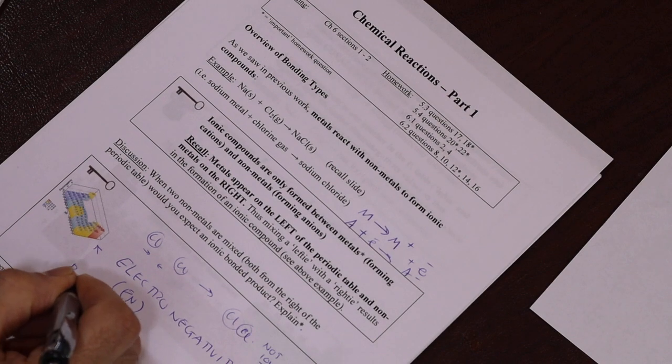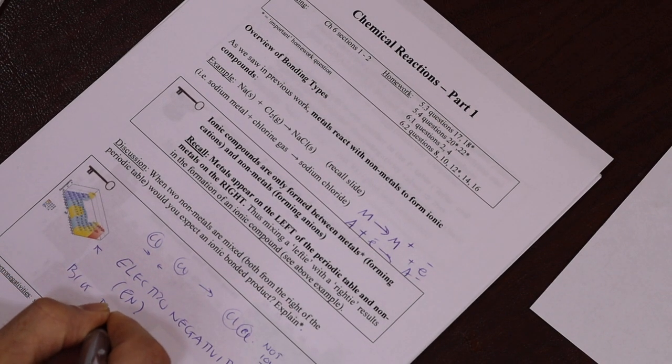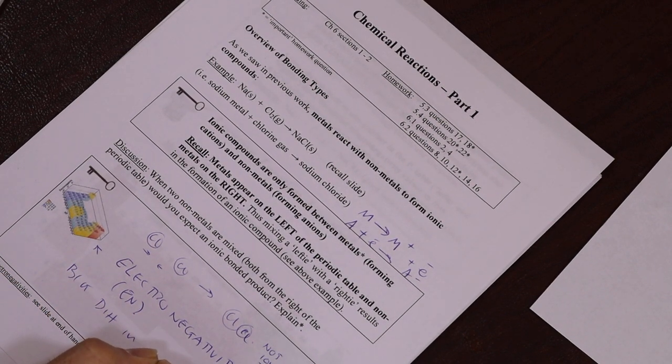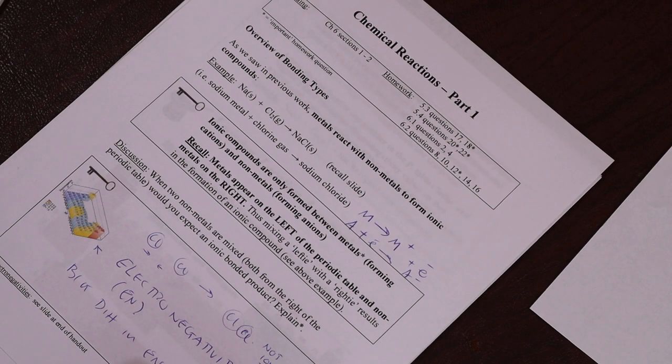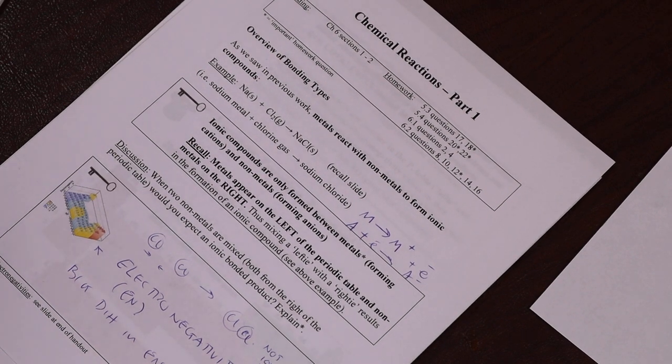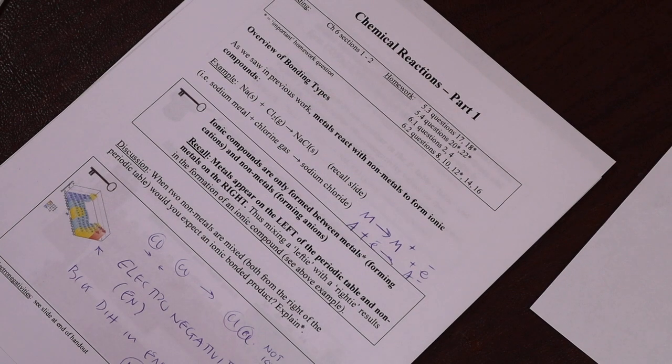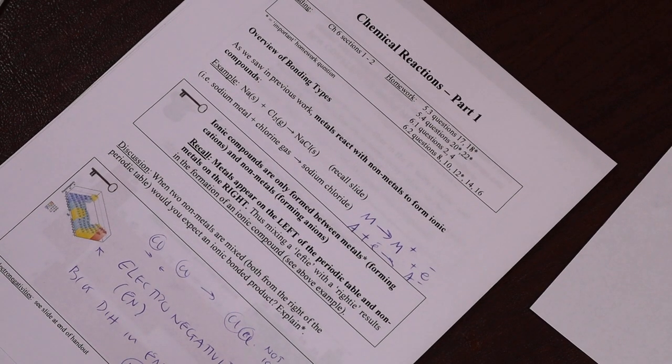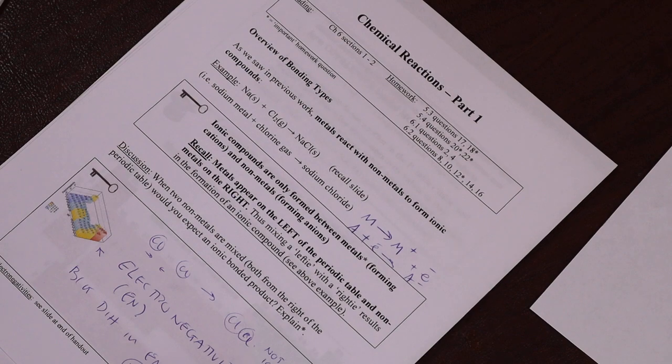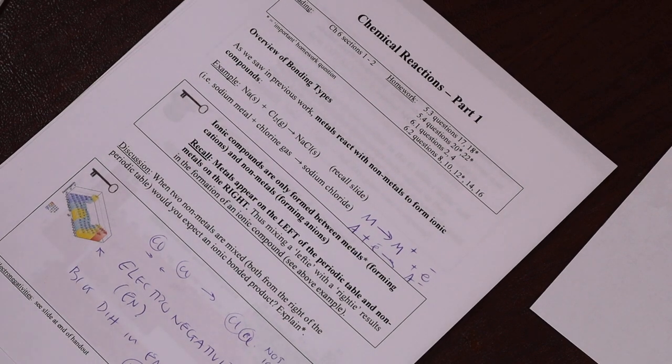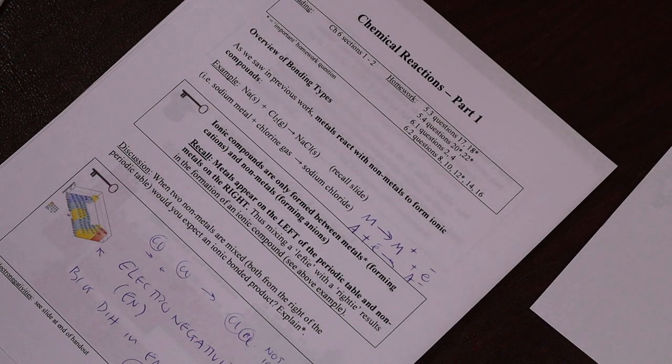So we need a big difference in electronegativity for our ionic bond. Mix a weak with a strong and we get an ionic bond. Okay, that only happens when we have a metal from the left mixed with a non-metal from the right.